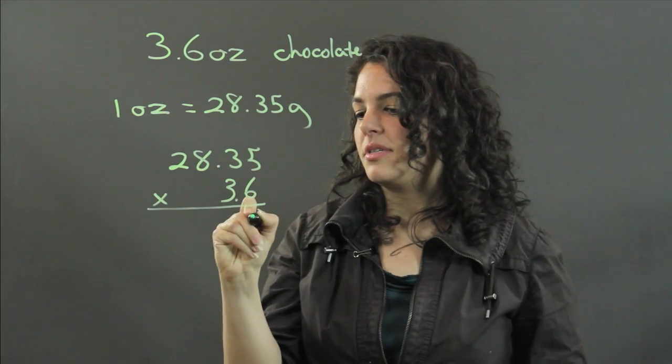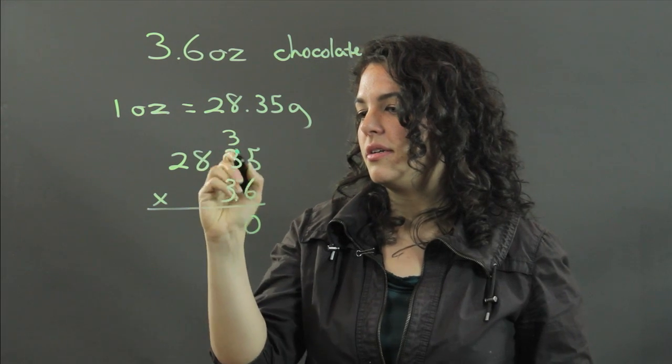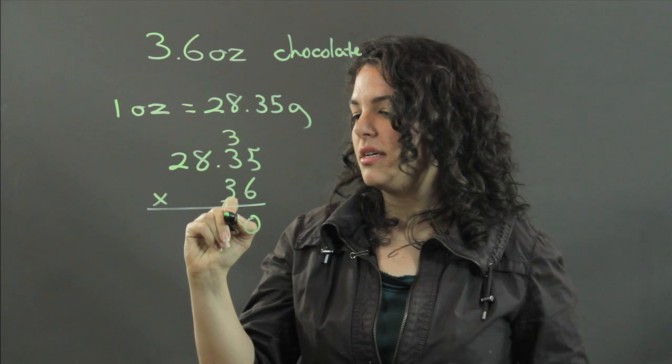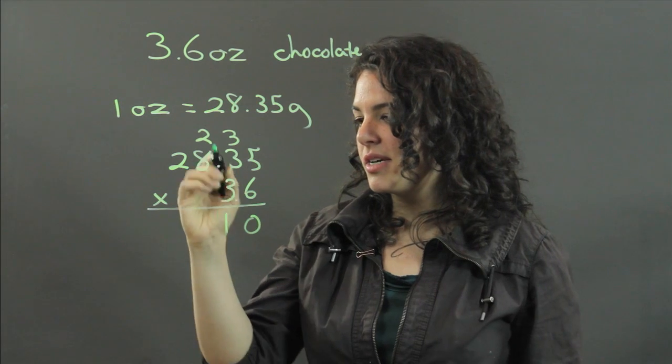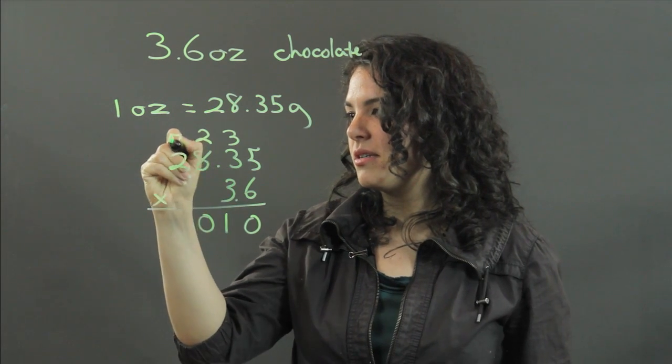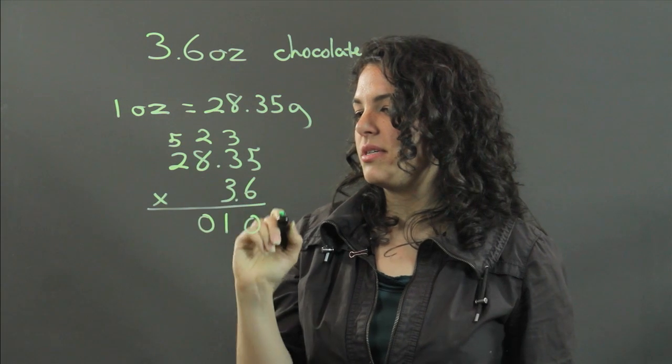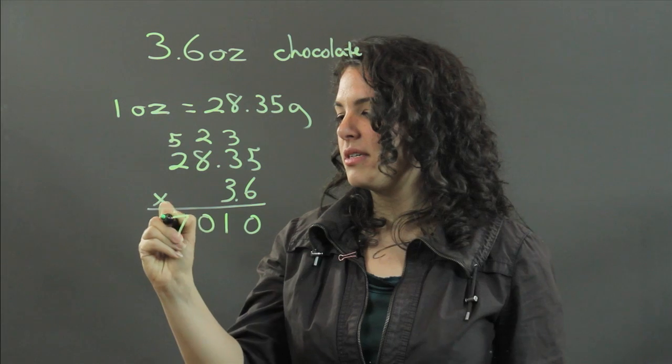5 times 6 is 30. 3 times 6 is 18, plus 3 is 21. 6 times 8 is 48, plus 2 is 50. And 2 times 6 is 12, plus 5 is 17.